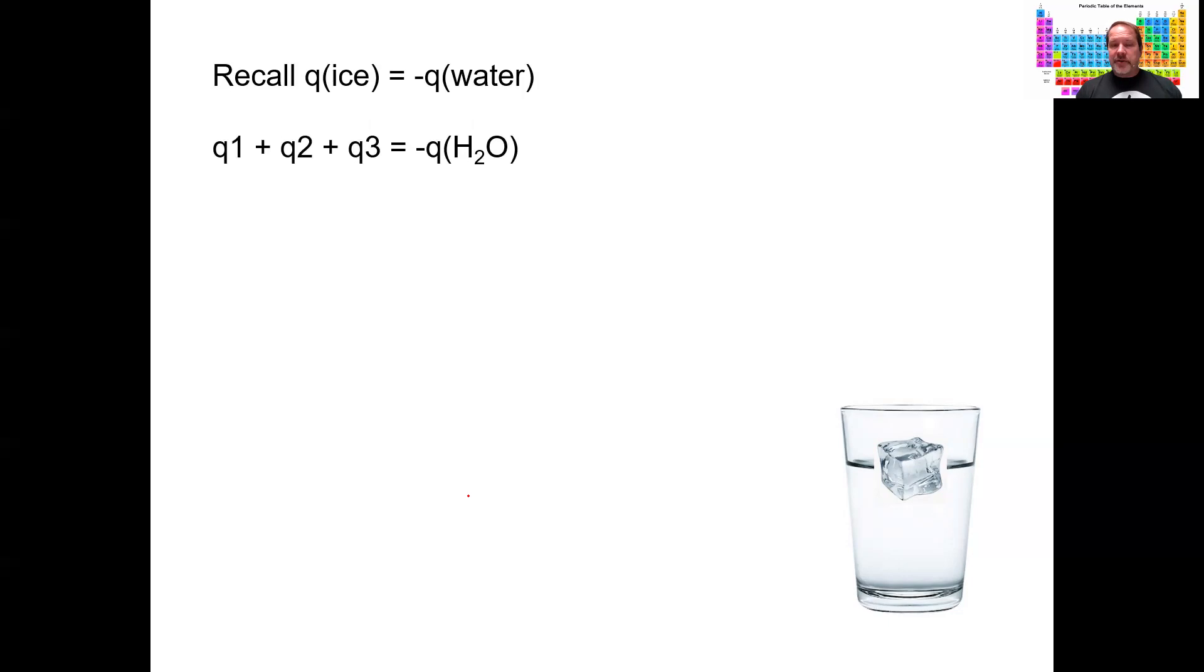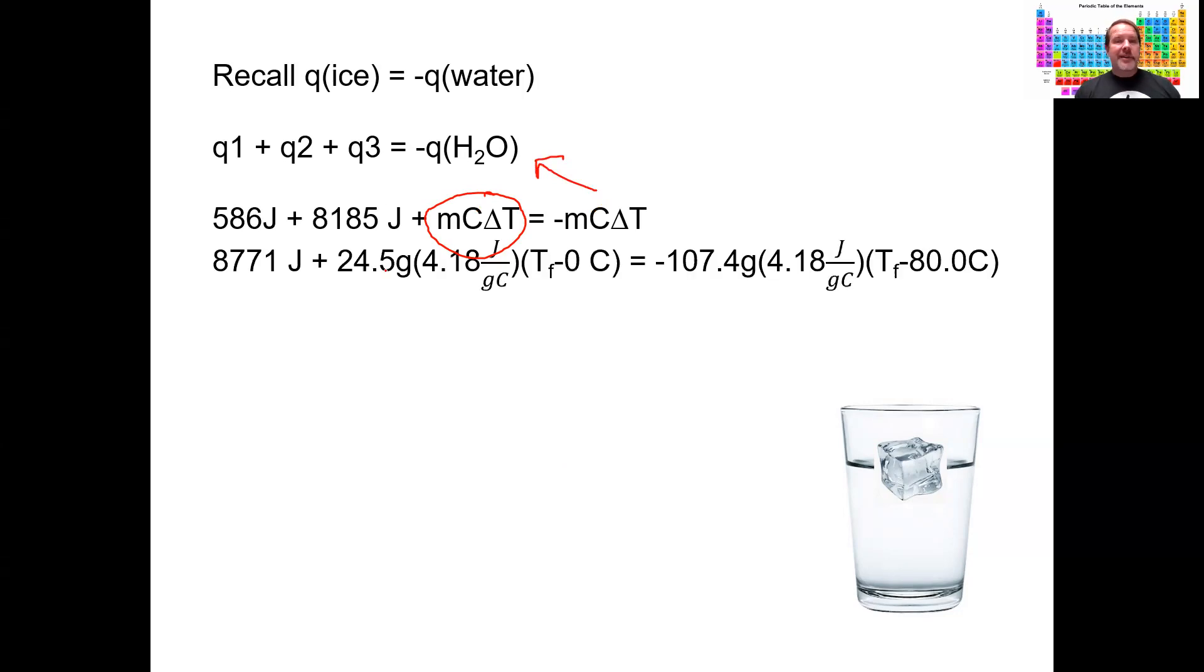So we already did a Q1 and a Q2 to get the ice to liquid water. Now I'm going to get that water and heat it up all the way to some final temperature. So I need the MCAT formula again to take the ice part of it up to some final temperature. And then this is my MCAT that I need to cool down water to some final temperature. Well, what final temperature? I don't know.